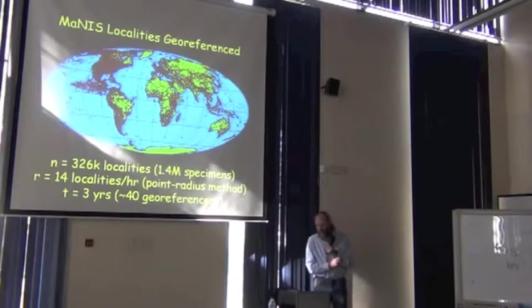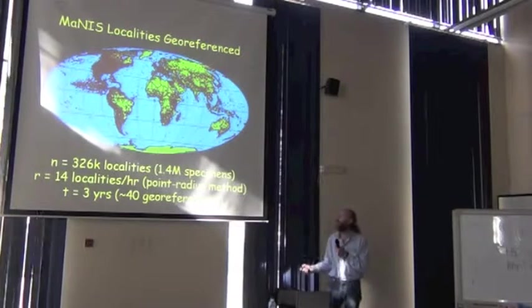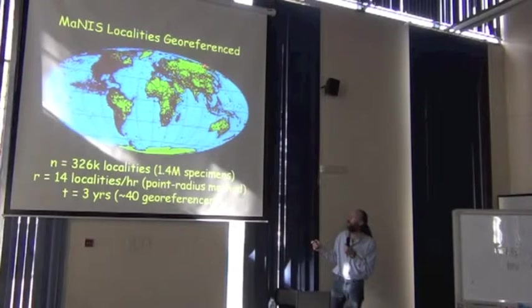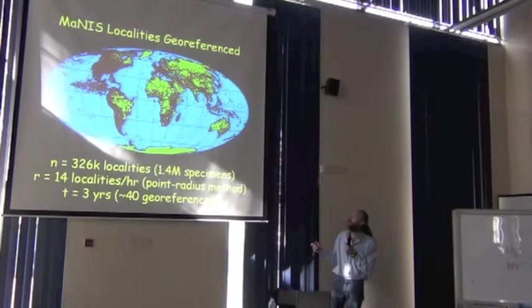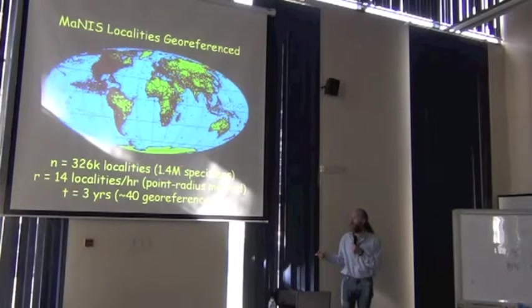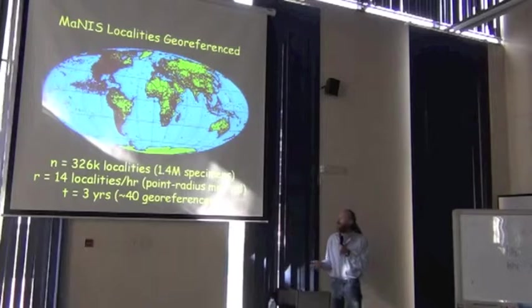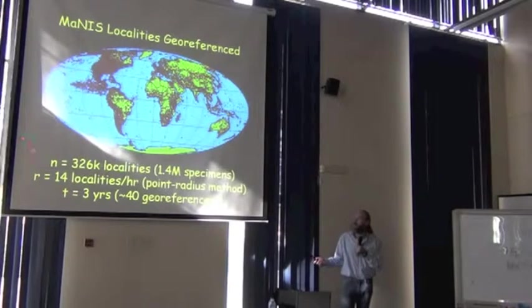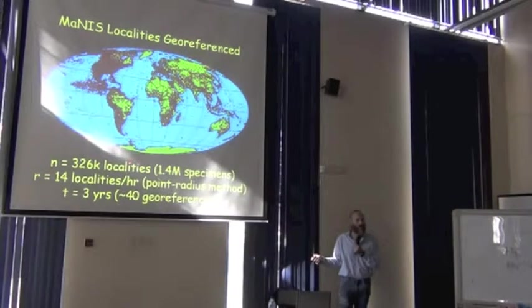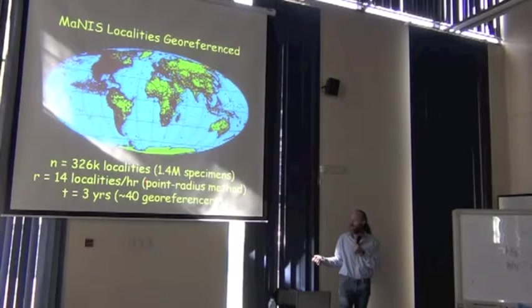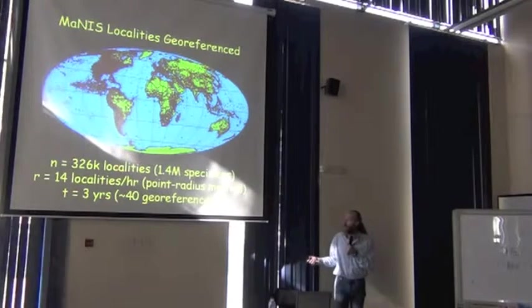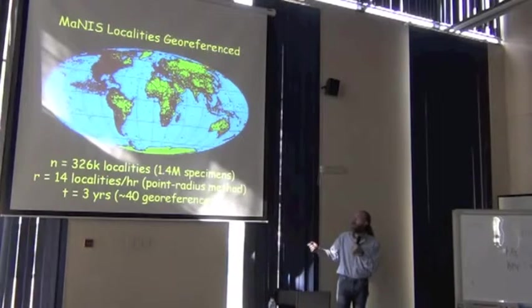The scope of the problem within the MANIS network alone - this is the Mammal Networked Information System, the first of the three large-scale georeferencing projects - there were 326,000 unique localities among 1.4 million specimens in the network. We were able to georeference at a rate of 14 localities per hour on average, using the point-radius method for which we developed the documentation, the tools, and so on. And in a period of three years, using about 40 different georeferencers, we were able to complete this task entirely.